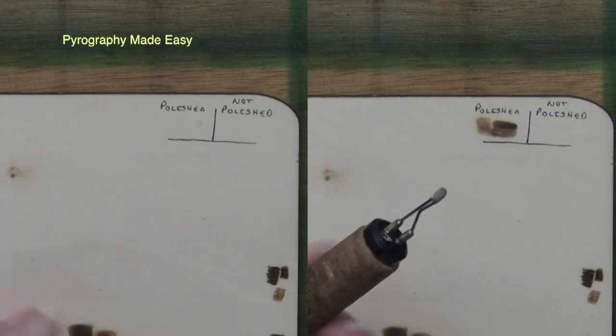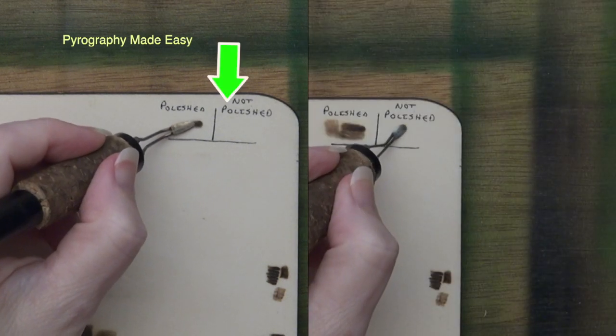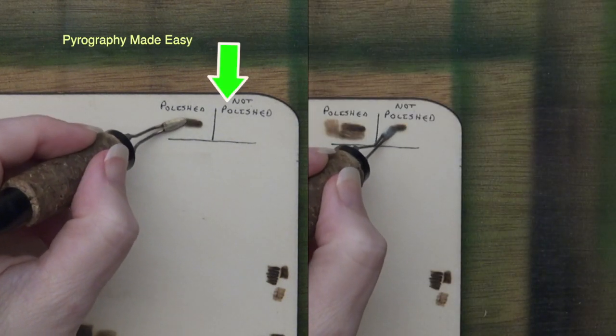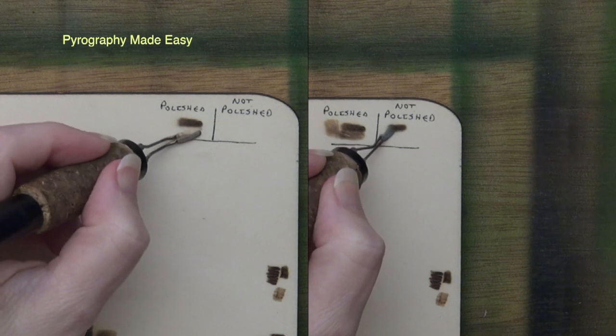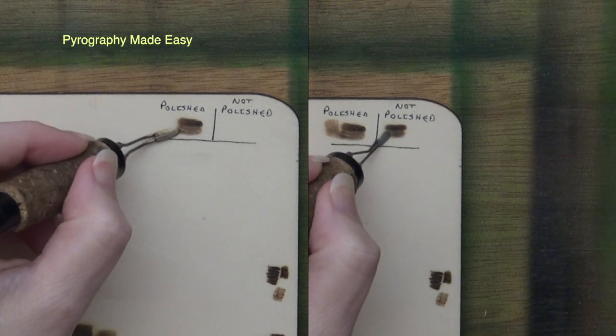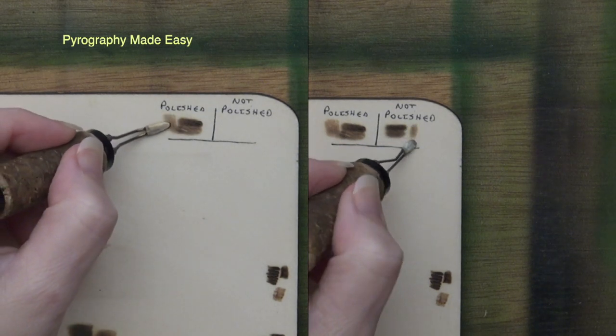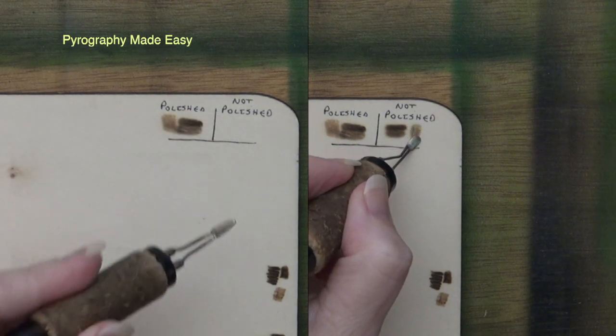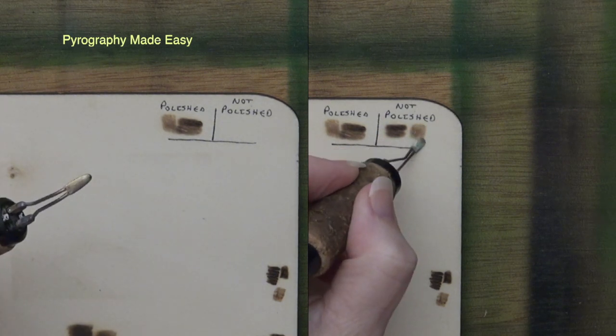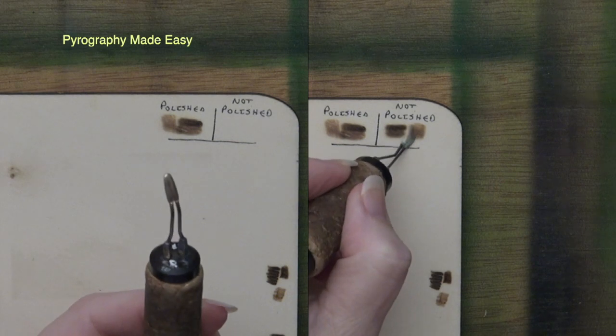For this part of the demo, I am starting out with clean pen tips and the pen on the left is polished. When burning on wood, I notice that the polished tip glides over the surface easier but it's not super noticeable. Neither pen tip had any carbon buildup during this particular portion of the test.